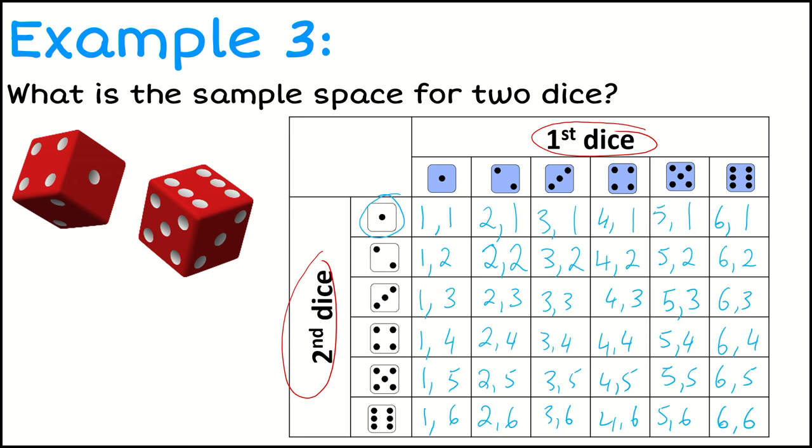And that comes from the fact that the first dice has 6 possible ways that I could do it, and the second dice has 6 possible ways that I could do it. 6 times 6 gives me 36 different combinations.